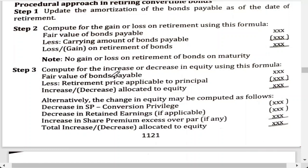Next, compute for the increase or decrease in equity using this formula: the fair value of the bonds and retirement price applicable to principal — get the difference. It is an increase if positive, a decrease if it is negative, so this is allocated to equity. Alternatively, the change in equity may be computed as: decrease in share premium conversion privilege, decrease in retained earnings if applicable, and increase in share premium excess over par if any — and that would be your total increase or decrease allocated to equity.